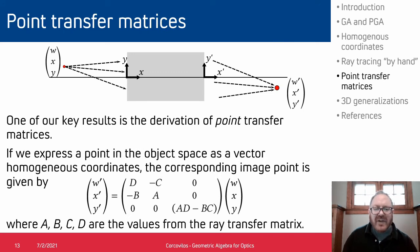So the key result that I mentioned up at the top of the talk was that we can also derive point transfer matrices using the rules of geometric algebra. And so that gives us a new matrix which is used to connect object points to image points if those points are represented in homogeneous coordinates.